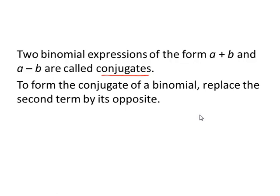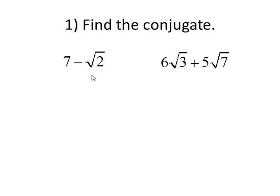Let's take a look at a couple of examples. The conjugate of 7 minus the square root of 2 is 7 plus the square root of 2. Change the sign of the second term. The conjugate of 6 square root of 3 plus 5 square root of 7 is 6 square root of 3 minus 5 square root of 7. We simply negate the second term.